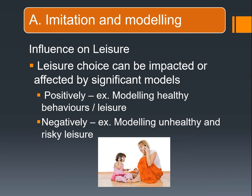For each of these social influences we need to understand the influence on leisure. Leisure choice can be affected by significant role models, and this can be positive or negative. For positive behaviors, you're modeling healthy leisure choices. For example, if a child's parent or parents are physically active, children are around seven times more likely to be physically active in adulthood.